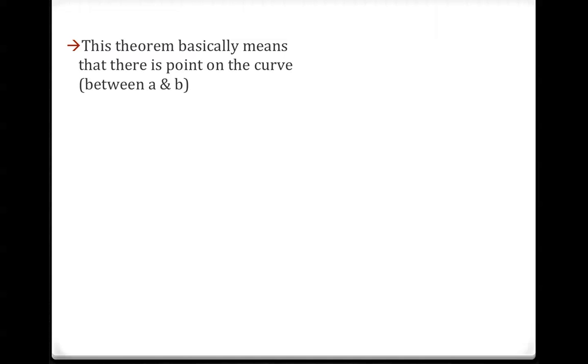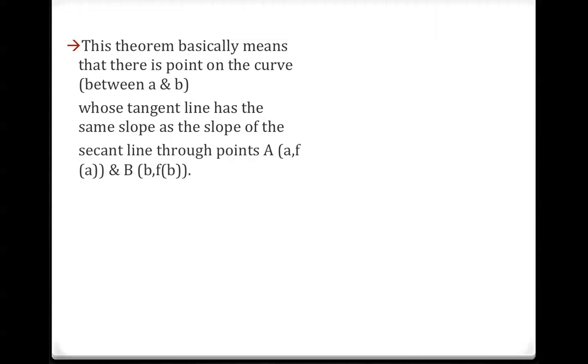The theorem basically means there is a point on the curve between a and b whose tangent line has the same slope as the secant line through the endpoints.